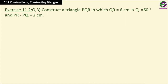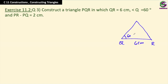A similar question: construct a triangle PQR in which QR is 6 centimeters, angle Q is 60 degrees, and PR minus PQ equals 2 centimeters. Since PR is the first side and is longer, when we subtract the two sides the extension will be towards the lower side of Q — let's call that point S, which is 2 centimeters. Connect this side and take the perpendicular bisector between the two points to find the required triangle.